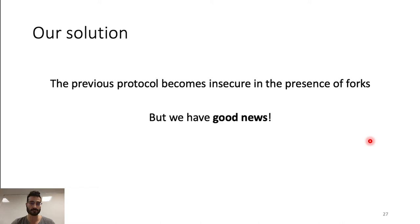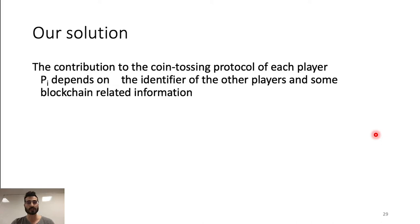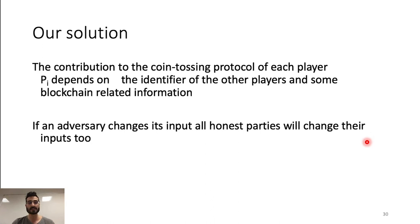By using cryptographic tools, we can produce an efficient protocol that generates a random string in the presence of hasty players. In our solution, the contribution of the coin tossing protocol of each player pi depends on the identifier of the other players and some more blockchain-related information. If an adversary changes its input, then all honest parties will change their inputs too.